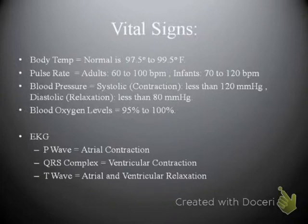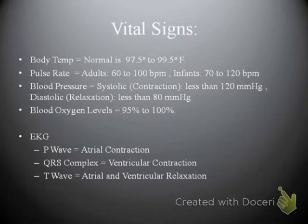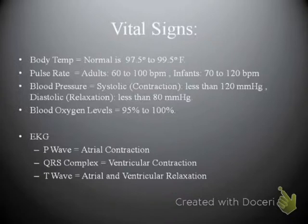Blood oxygen levels are an important indicator of where a patient is heading. We typically want blood oxygen levels to be 95% to 100%. If they drop below 90%, interventions such as BiPAP may be needed. If they drop into the 80s, endotracheal tubes or tracheostomies may be inserted to help the patient breathe more efficiently.